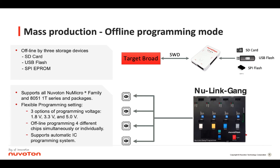In offline programming mode, users can pre-store the programming file in SPI Flash, USB Flash Drive, or SD card. When the user wants to program the target chip, pressing the programming button on NuLink 2 Pro completes the programming action. If a large number of ICs need to be programmed, it is recommended to use the NuLink Gang Programmer, which can perform offline programming on four different chips at a time, significantly increasing programming efficiency.